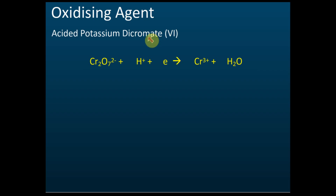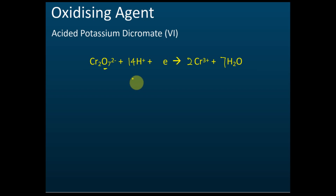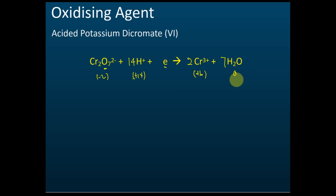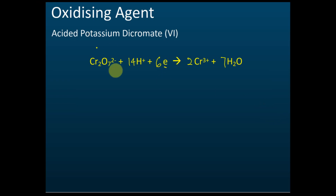Next, potassium dichromate. There are two chromium atoms, so we need two Cr³⁺ ions. There are seven oxygens, so we need seven water molecules, giving 14 hydrogens, so 14 hydrogen ions. Elements are now balanced. The charge on the left: dichromate is negative two, plus 14 hydrogen ions is positive 14, total positive 12. On the right: two Cr³⁺ gives positive six, water is neutral. We need to add six electrons to the left side to balance the charge.